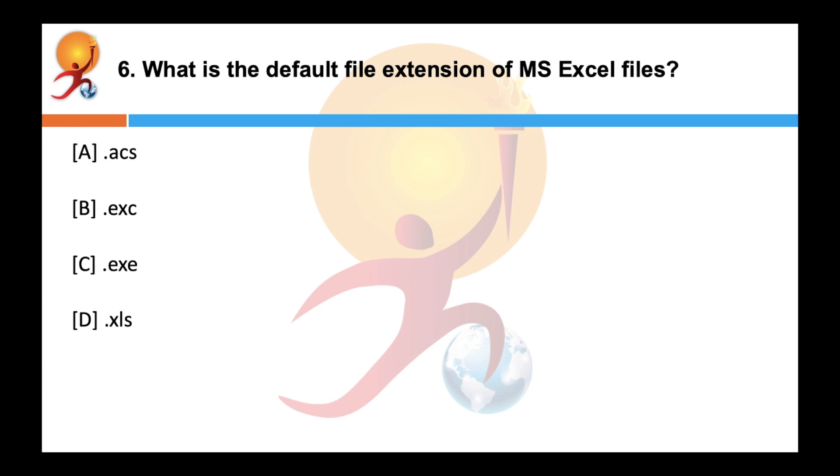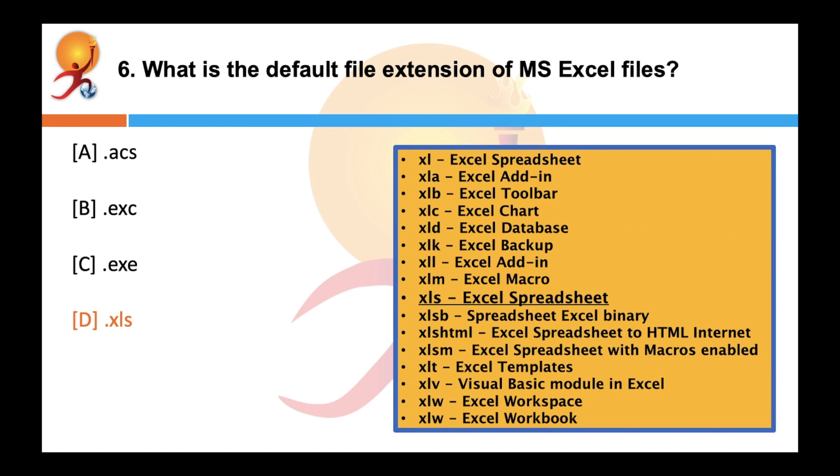What is the default file extension of MS Excel files? Correct answer is D. XLS file extension icon is the default MS Excel file extension. XLS is a file extension for a spreadsheet file format created by Microsoft for use with Microsoft Excel. The EXC file extension is related to Microsoft Word and is used for files that contains exclusion dictionary data. Then here are some of the examples of various file extensions.